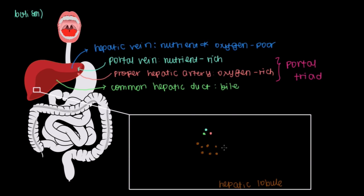Now this portal triad isn't found in just one part of the hepatic lobule. In fact, there's a bunch of them that surround the hepatocytes and make this very familiar shape you might recall from chemistry. It's this six-sided ring that makes up the hepatic lobule that has six units of the portal triad surrounding the hepatocytes.